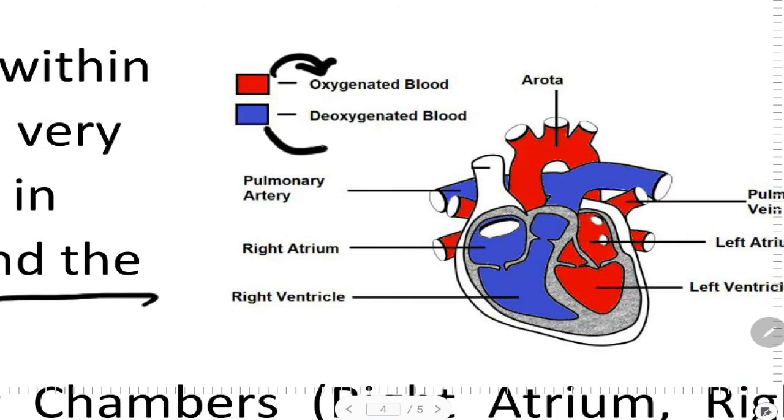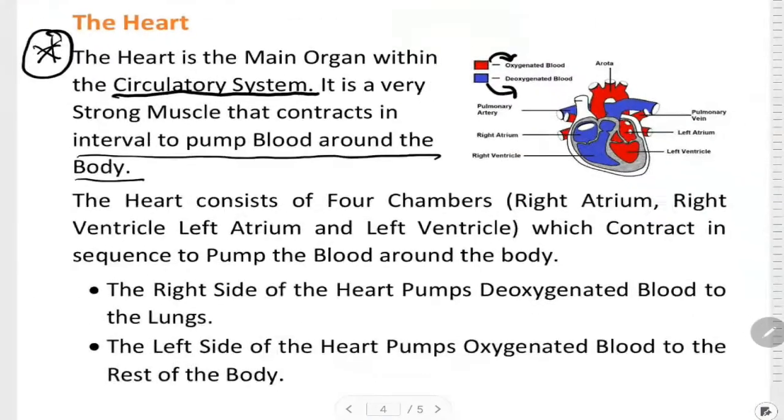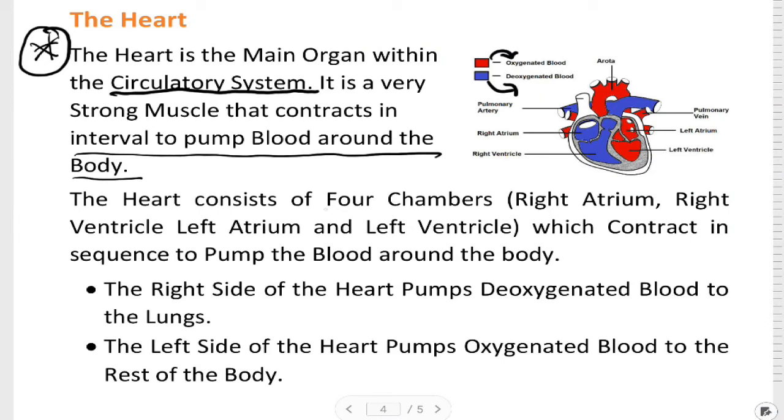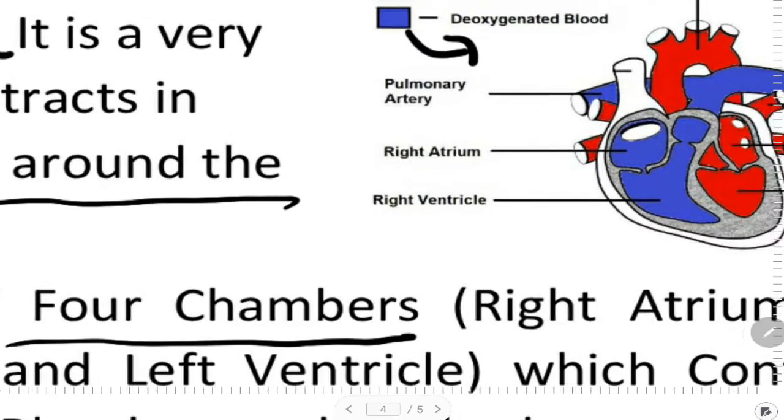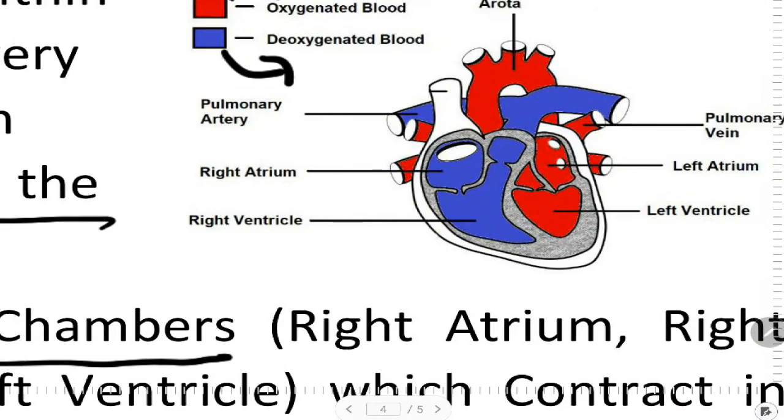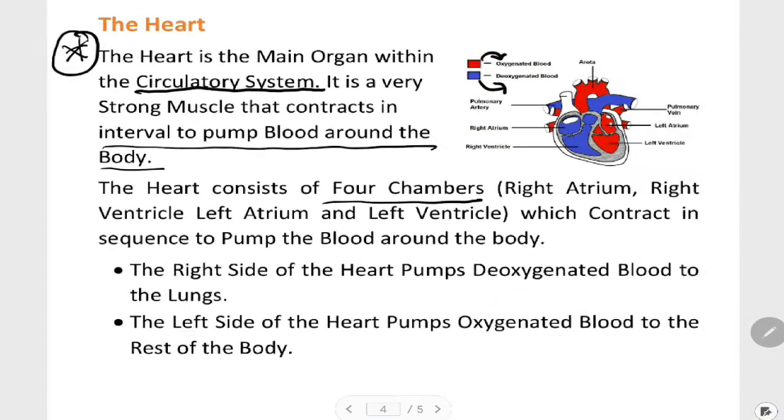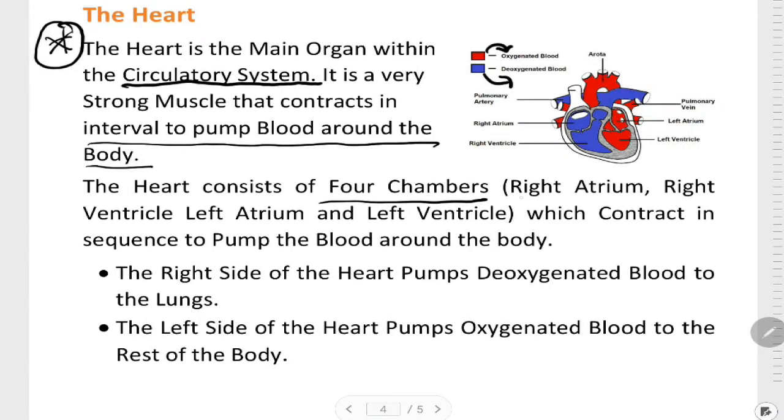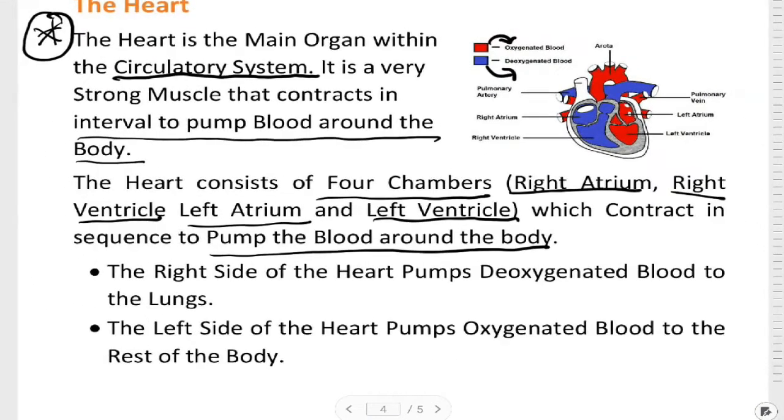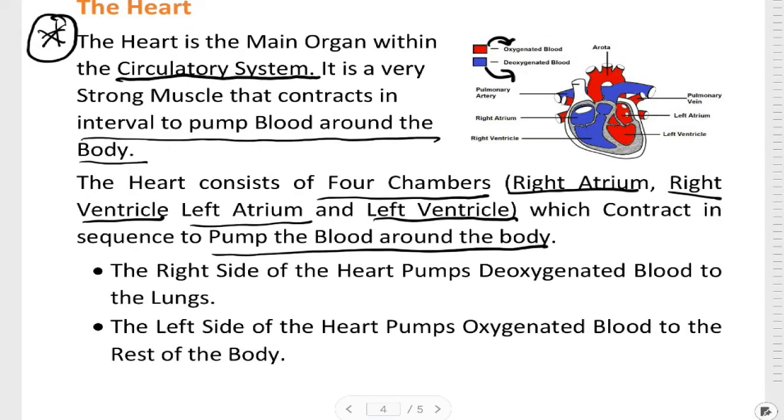So where are the four chambers? These are the four chambers: right atrium, right ventricle, left atrium, and left ventricle, which contract in sequence to pump the blood around the body. The right side of the heart pumps deoxygenated blood to the lungs.